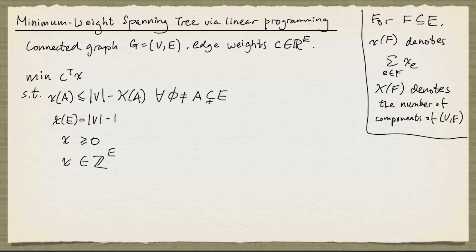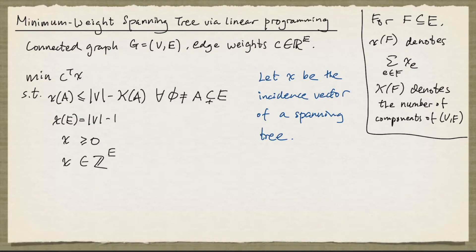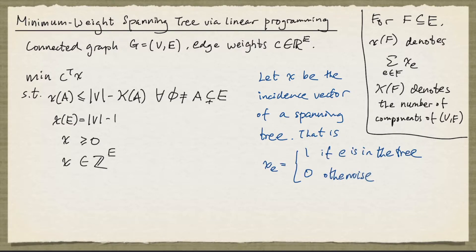First, we'll show that if you take an incidence vector of a spanning tree, it satisfies all these constraints. Let X be the incidence vector of a spanning tree — that is, X_e is 1 if e is in the tree, and 0 otherwise. Clearly, C transpose X gives the weight of the spanning tree.